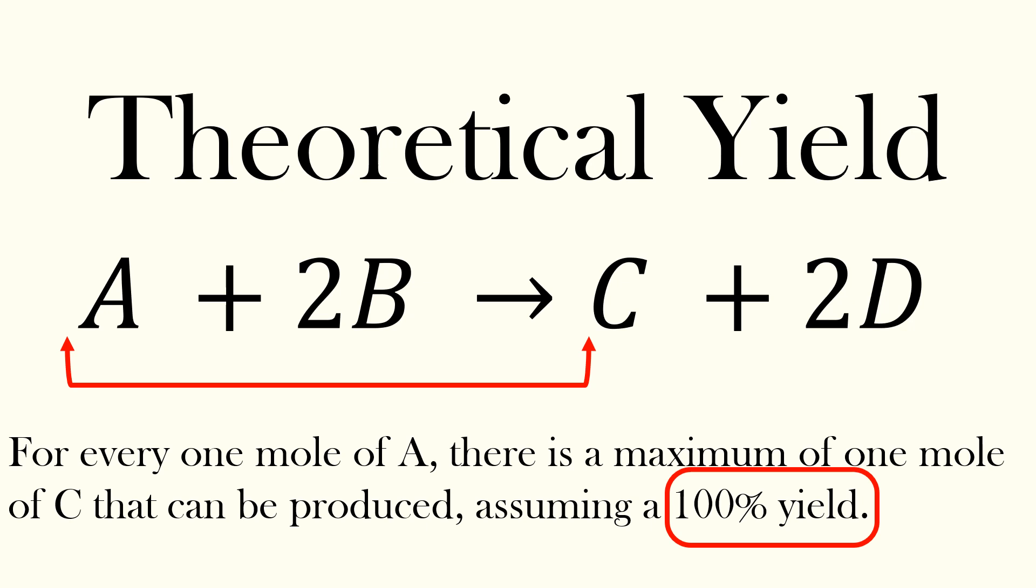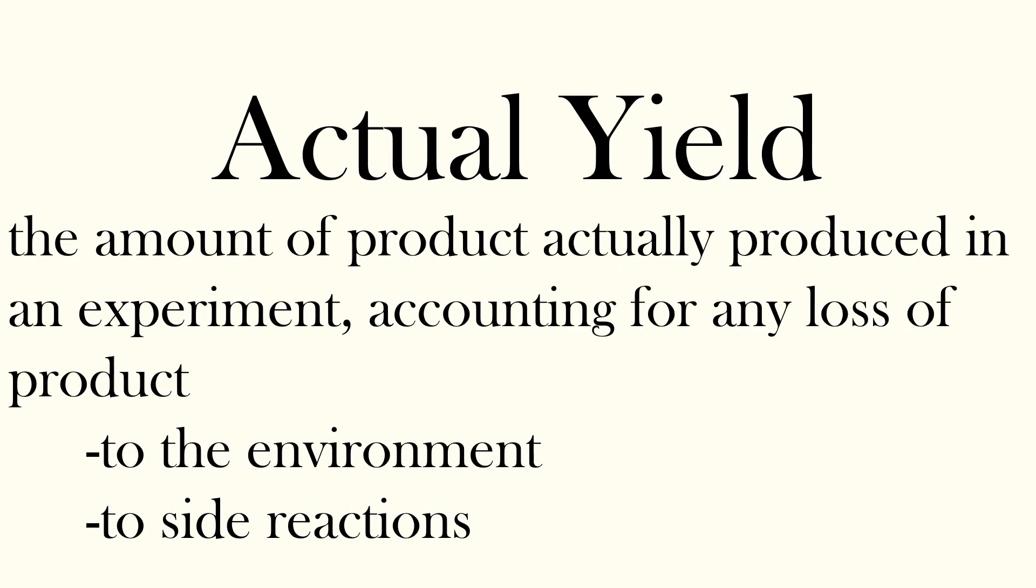What happens if not all 100% reactant is converted to product? This would be called an actual yield. The actual yield is the amount of product actually produced in an experiment, accounting for any loss of product to the environment, in other words, during any transfers or during measurement, or to side reactions.